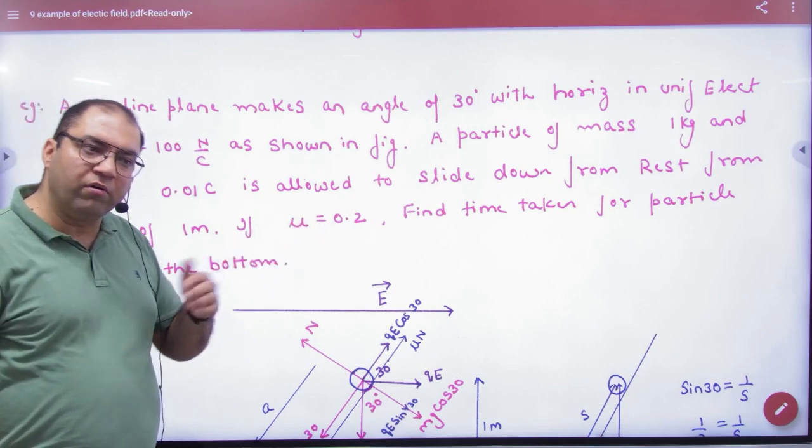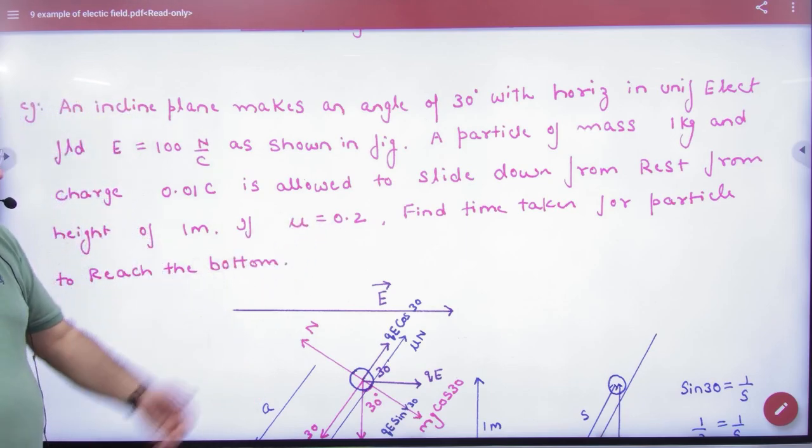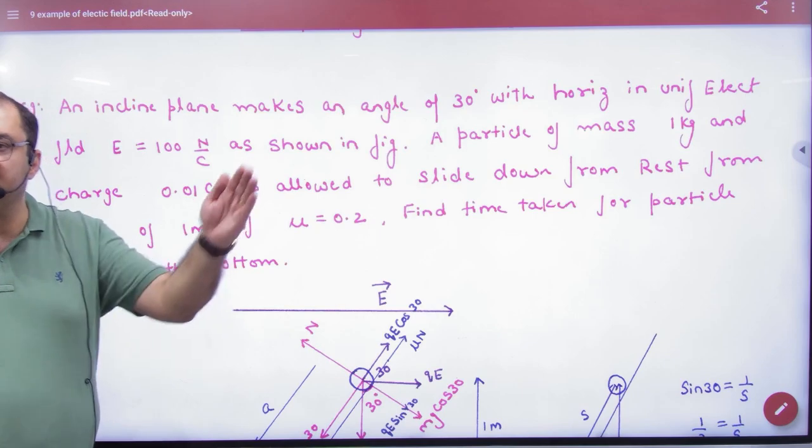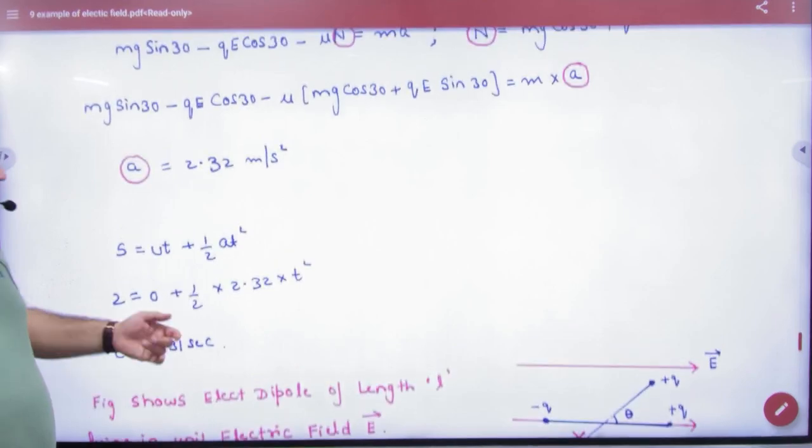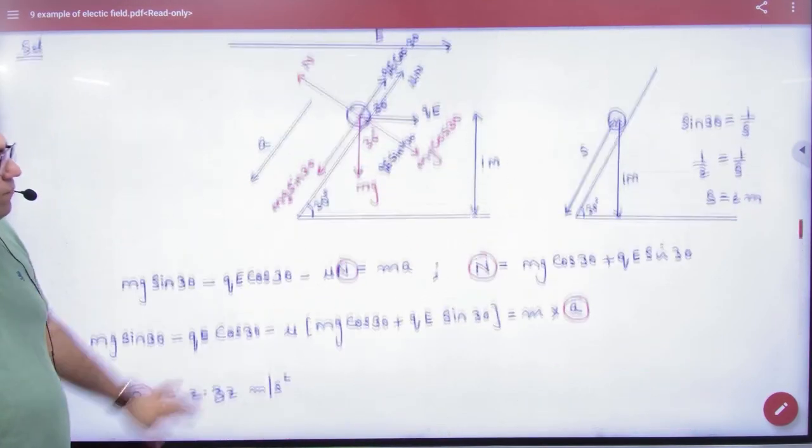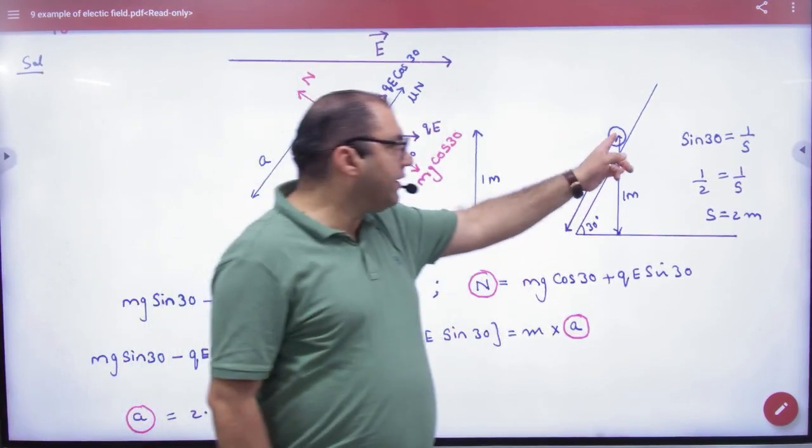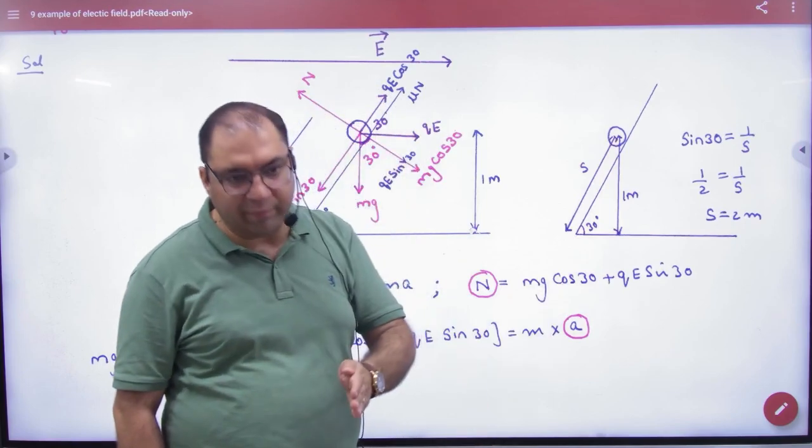Coefficient of friction mu is also given. And how to find the time for this particle? The particle goes and goes down. He said that 1 meter height, vertical height 1 meter. But I don't need vertical.